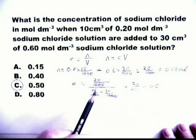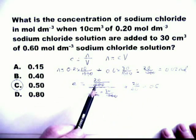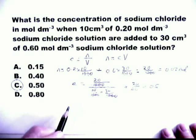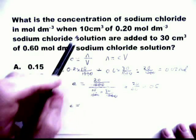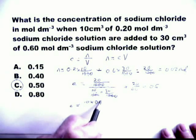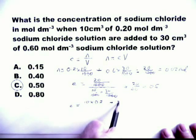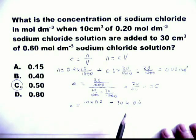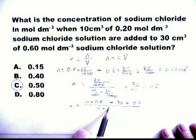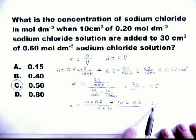Now look carefully at this. You can see the formula can be simplified. Simply look at the numbers given in the question. C equals 10 times 0.2 plus 30 times 0.6 divided by the total volume, which is 10 plus 30. And that equals 20 over 40, which equals 0.5.